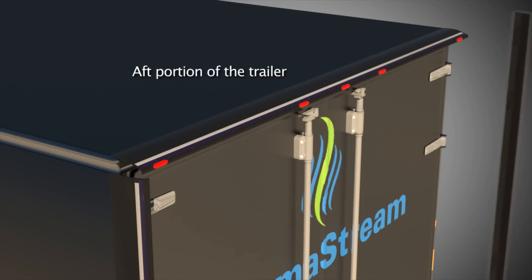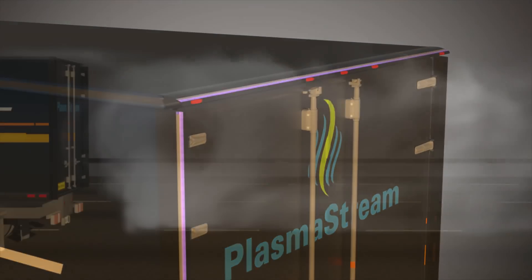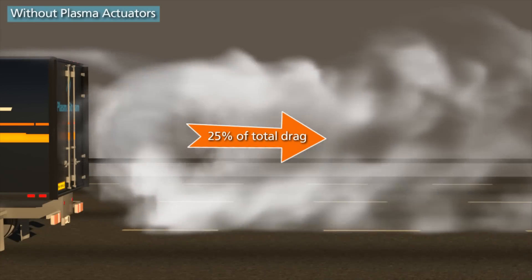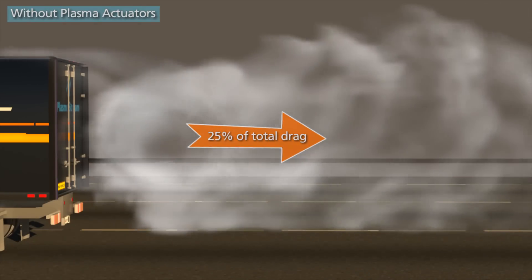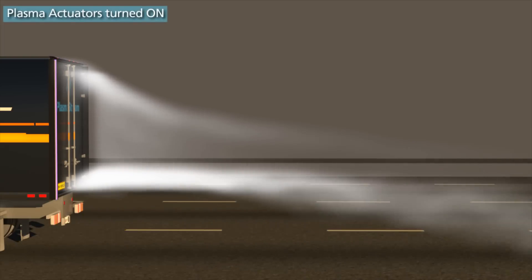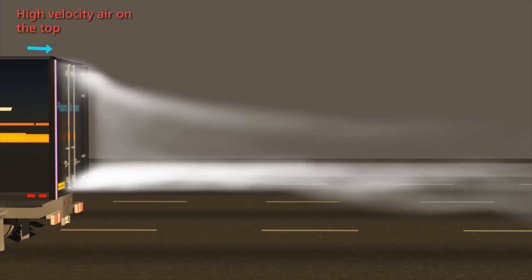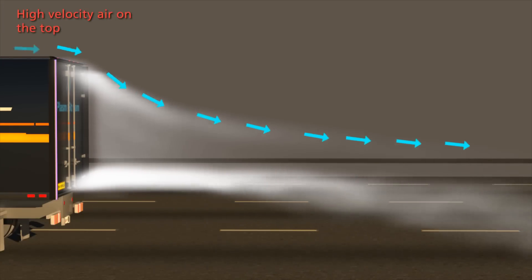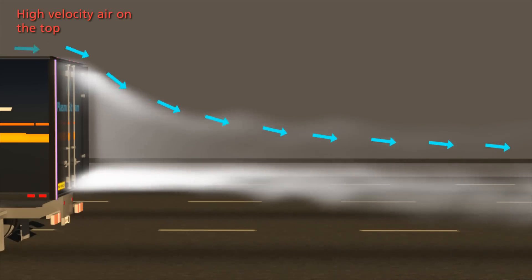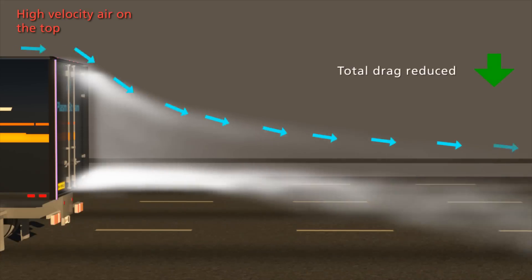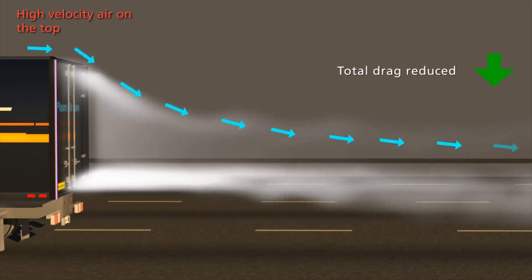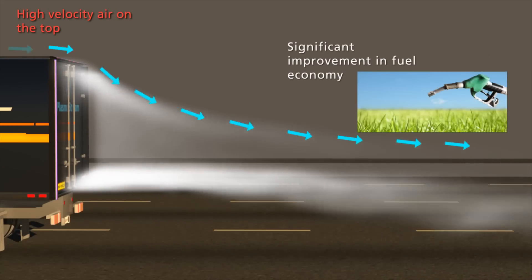PlasmaStream's initial product will be designed for the aft portion of the trailer, which contributes up to one-quarter of total vehicle drag. Plasma actuators placed on the aft edge of the trailer could lead to a 7-10% reduction in fuel consumption. This is achieved by using plasma actuators to divert high-velocity air around the sides of the trailer to low-pressure turbulent vortex region on the back of the trailer. By doing this, the overall drag is reduced that will directly correlate to improvement in fuel economy.